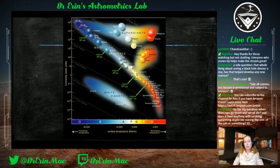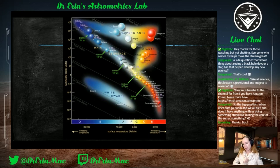Astronomy 102 will cover things like the stellar life cycle, galaxy classification, galaxy formation, black holes, white dwarfs, and all that fun exciting stuff. As for when our Sun goes boom — our star is quite average, so it will live for its full 10-billion-year main sequence life before becoming a red giant.